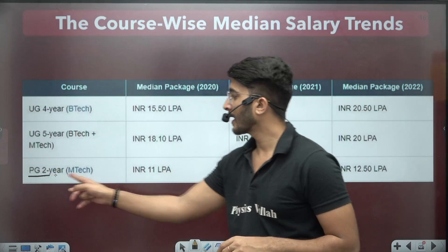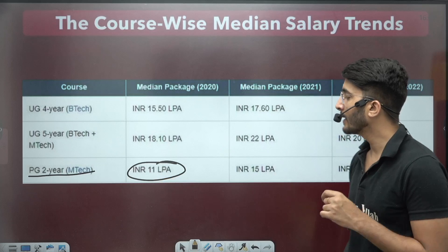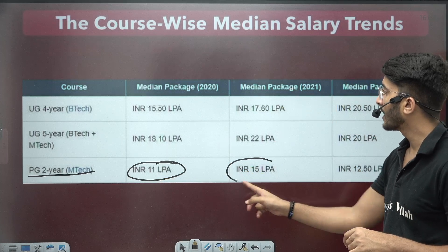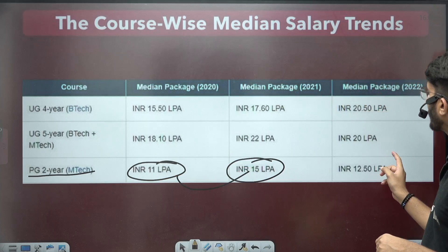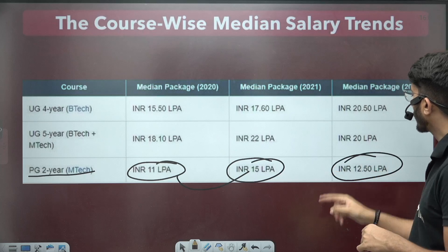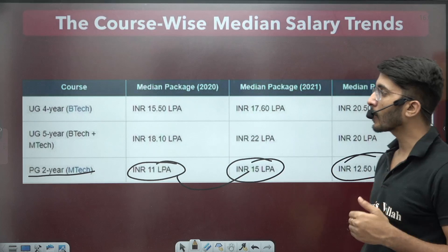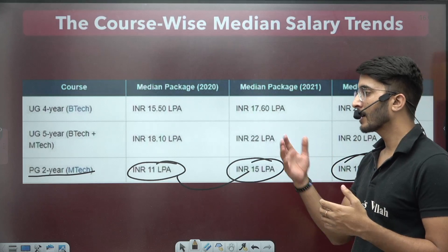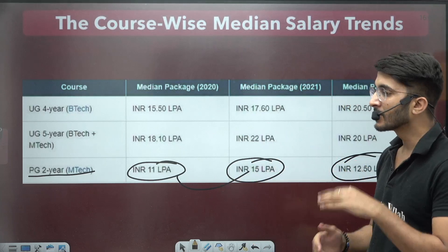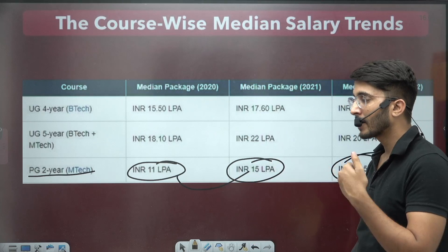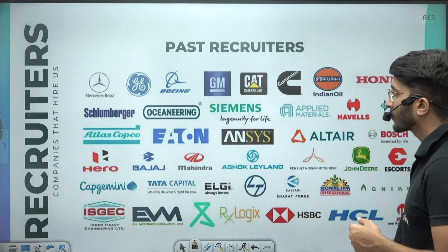For PG 2-year median package for 2020, it was INR 11 LPA. For 2022, the median package was INR 12.50 LPA. For upcoming years, the median package range lies approximately between 10 to 15 LPA, so if you want this type of placement, you can join IIT for your master's program.